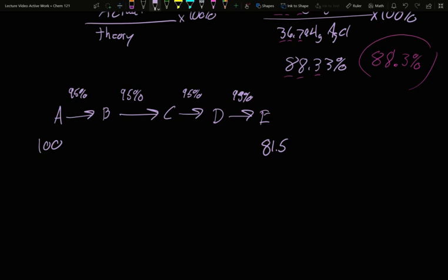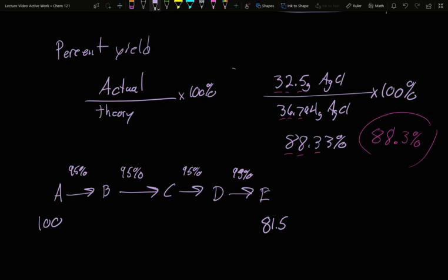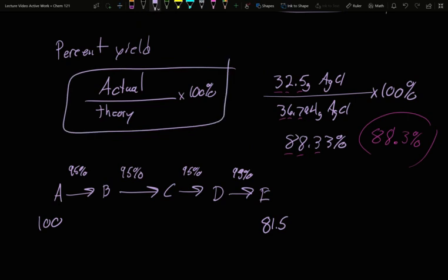So percent yields are important, and this is how we go and calculate them. It really just comes down to you use stoichiometry to go from an amount of a starting material to find the amount of product you should have been able to make. That's the theory. And then you will actually weigh or be told the actual weight that you obtained. And so actual over theory times 100% gives us our percentage.